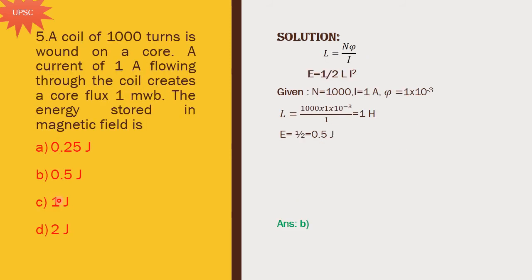Next problem: a coil of 1000 turns is wound on a core. A current of 1 ampere flowing through the coil creates a core flux of 1 milliweber. The energy stored in the magnetic field is? Using L = N phi / I = 1000 × 1 × 10^-3 / 1 = 1 Henry. Then E = 1/2 L I squared = 1/2 × 1 × 1 squared = 0.5 joules. Option B is the right answer.